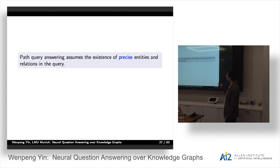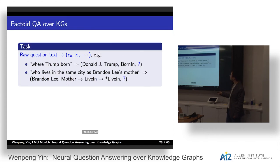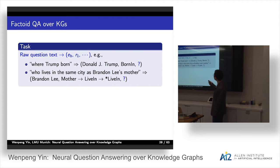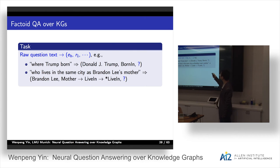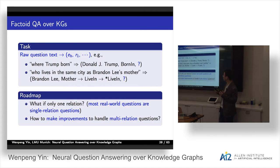That's the path query answering. It assumes the existence of precise entities and relations. But in real-world applications, we need to parse the factoid questions into path queries. The factoid question answering over knowledge graph is defined as: given a raw question text, project it into a path query. For example, 'Where is Trump born?' projects to Donald Trump and born-in. 'Who lives in the same city with Brandon Lee's mother?' projects to Brandon Lee, mother, living, and inverse living. The first example is a single-relation question; the second is a multi-relation question.